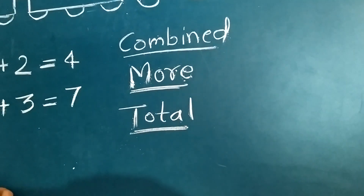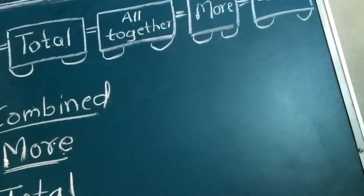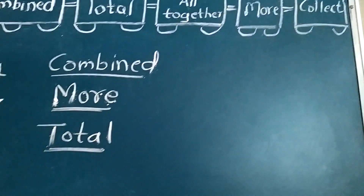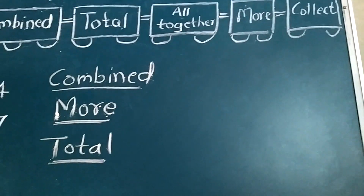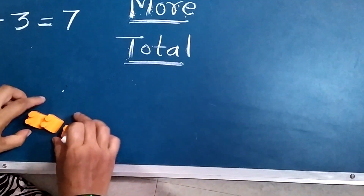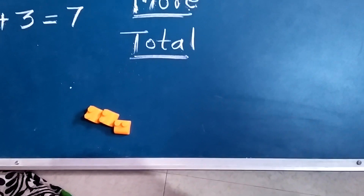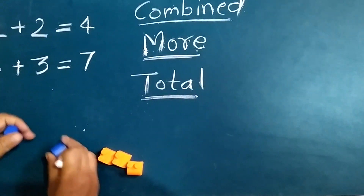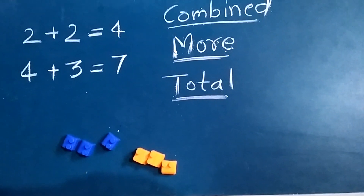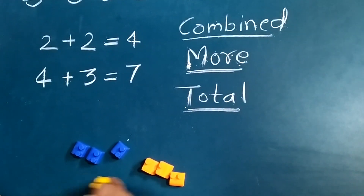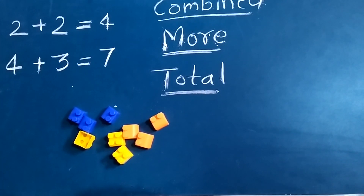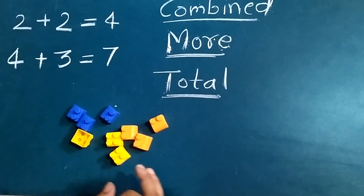Now collect all together. Swara collected three orange blocks. Pramai collected three blue blocks. And I have three yellow blocks.